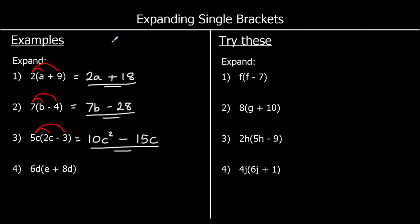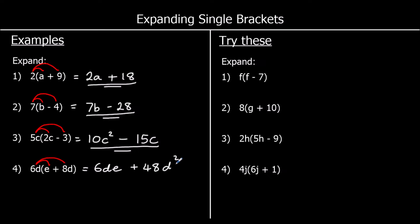And the last one, question 4. 6d times e: 6 times d times e, we just write that as 6de. And 6d times 8d: we can do 6 times 8, which is 48, and d times d, which is d squared. OK, 4 for you to try. Pause the video and give them a go.